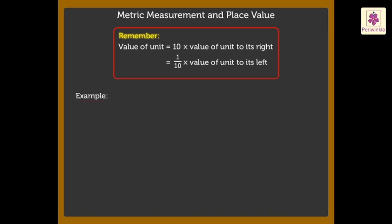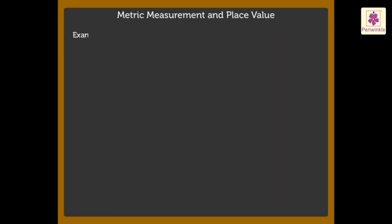For example, one gram is equal to ten decigrams. Based on the table, let us solve some examples and find the relation between a few units.